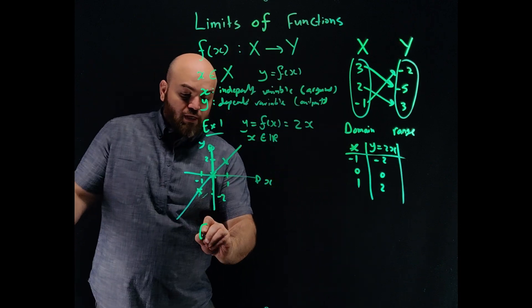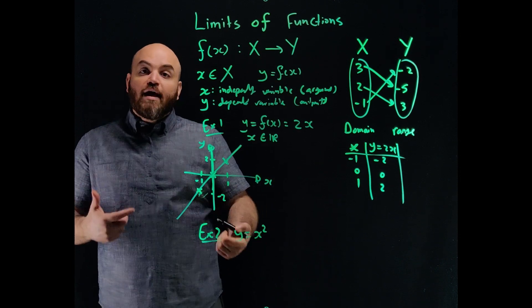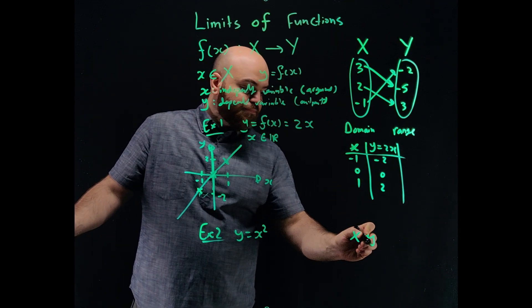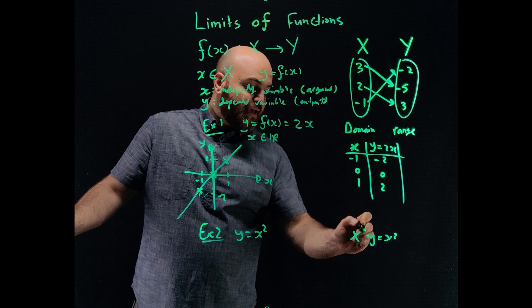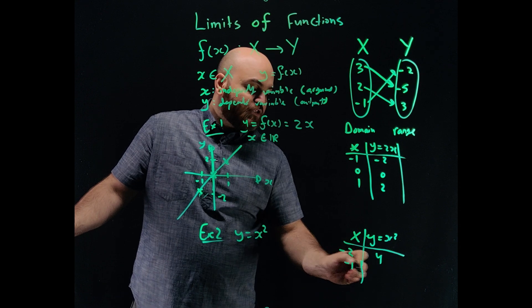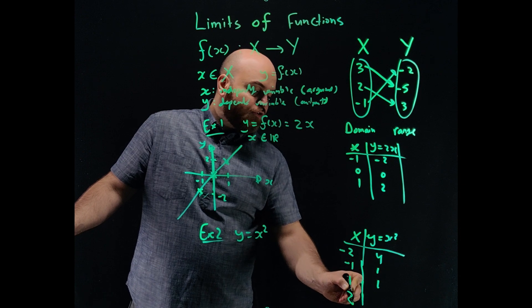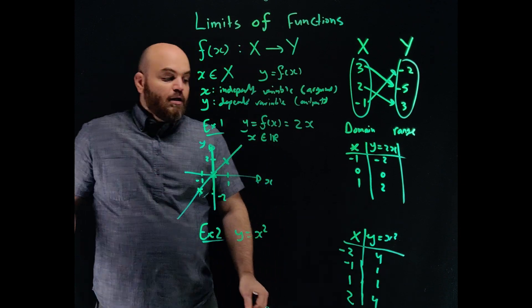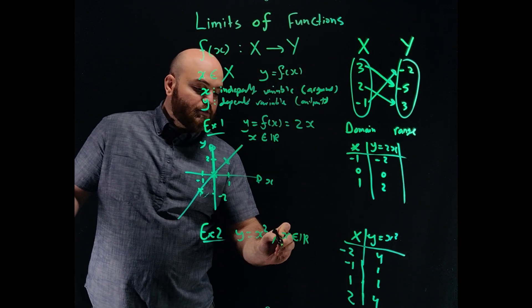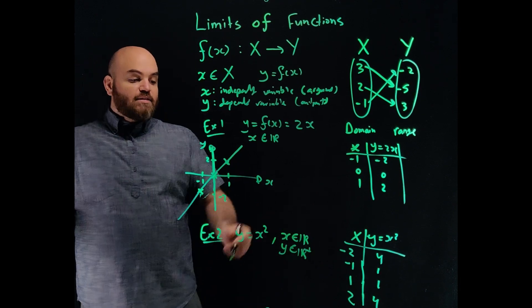Another example could be that y equals x squared. This is a quadratic function. If I do the same thing here for it and tabulate and look at the values, I can see that for -2, the value is 4. For -1, the value is 1. For 1, the value is 1. And for 2, the value is 4. You can see here that the variable x belongs to all the real numbers, but y belongs to the set of positive real numbers. That's because it's a quadratic.